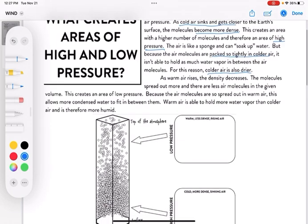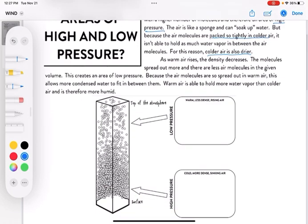As warm air rises, the density decreases. The molecules spread out more, and there are less air molecules in a given volume. This creates an area of low pressure. Because the air molecules are so spread out in the warm air, this allows more condensed water to fit in between them. Warm air is able to hold more water vapor than cold air, and therefore is more humid.